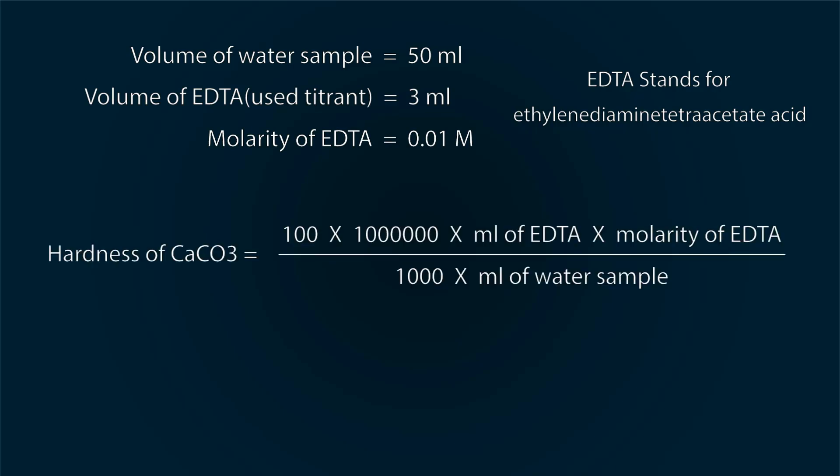Formula of calcium hardness is: 100 multiply 1 million multiply used titrant multiply molarity of used titrant divided by 1000 multiply used water sample. Put the values into the formula. After calculation, we have 60 ppm value.